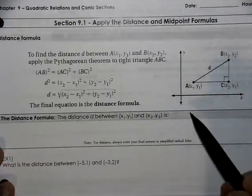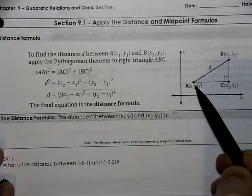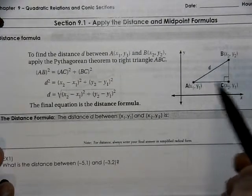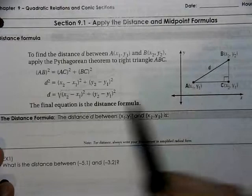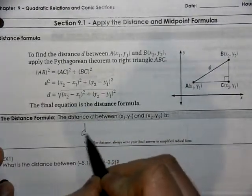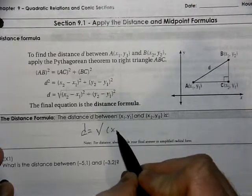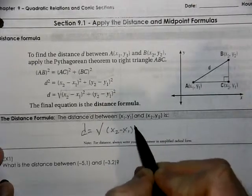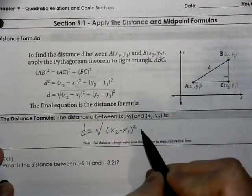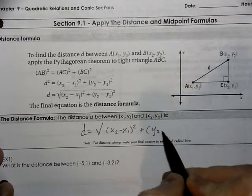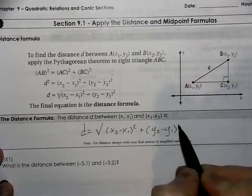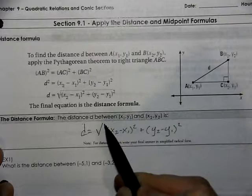We look at the distance formula and essentially the distance formula is the Pythagorean theorem where you take your x values and you subtract them and square that quantity, take your y values, subtract them and square that quantity.